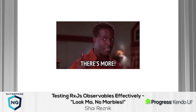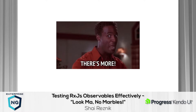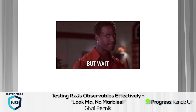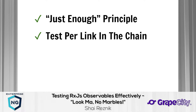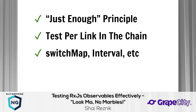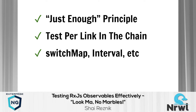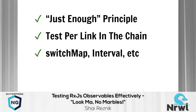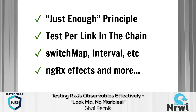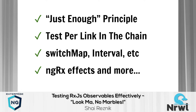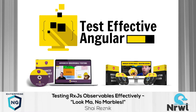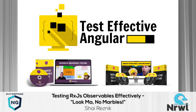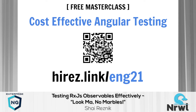I picked a simple example to fit in a short talk, but there are more complicated examples you'll encounter day-to-day. For that we have other principles: the 'just enough' principle, the 'test per link in the chain' principle, and how to use them for testing `switchMap` or intervals. Also, if you're using NgRx you'll want to learn how to test effects better. The same principles apply there.